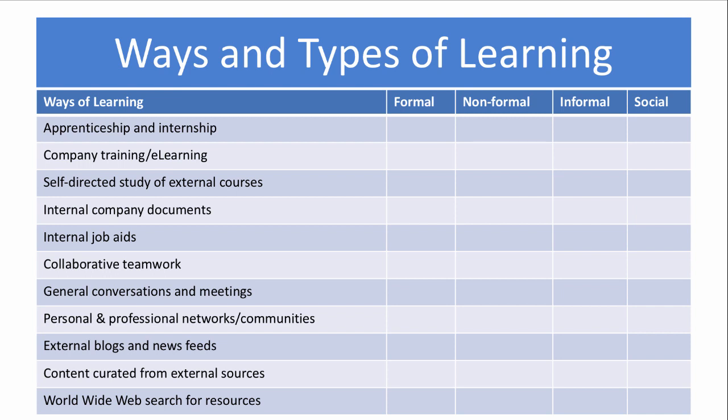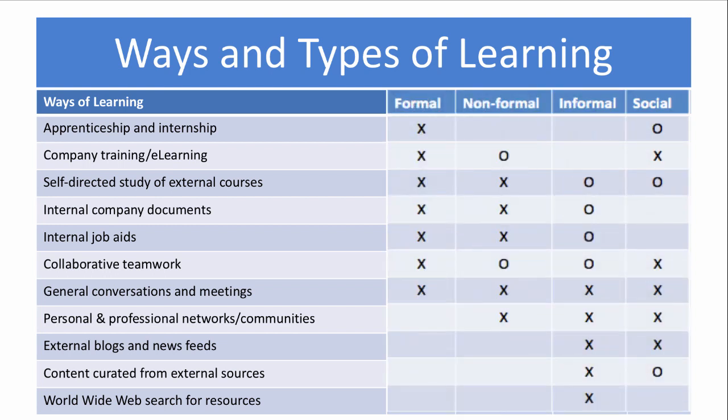Okay, let's see the answers. Fit is indicated by an X, and an O indicates that the tool and/or strategy fits into the specified category to some degree, but not exclusively. Again, I suggest you pause the video and try to rationalize where I've placed the X's and O's. We can talk about the fit in the upcoming tutorial.